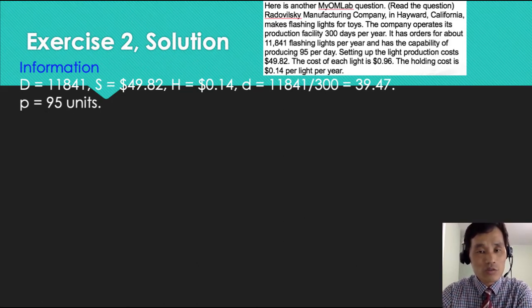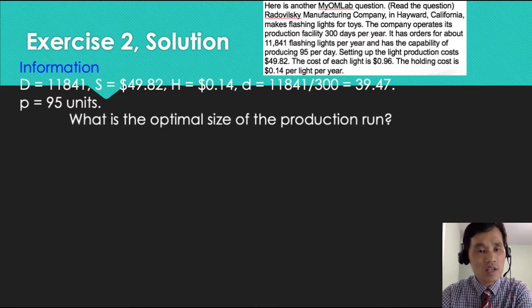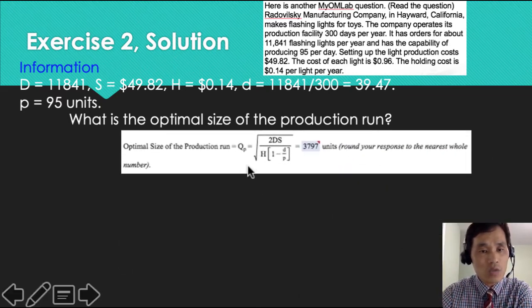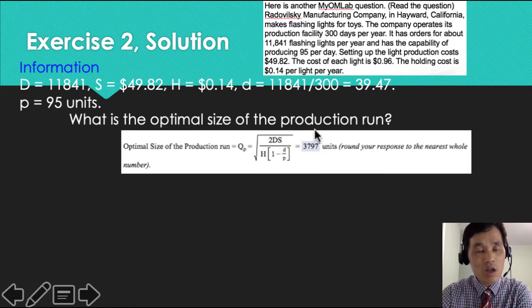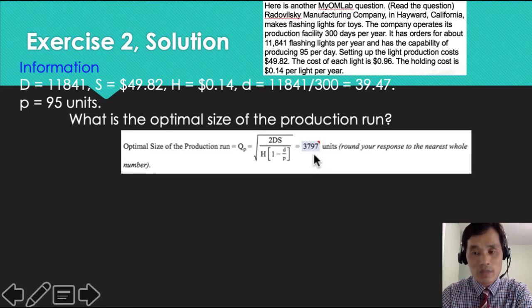The formula for production run is a little bit different. That's why I'm taking this example. What is the optimal size of the production run? When you are using EOQP, that's production run, EOQ for production run, you have to use a different formula, which is QP equals square root of 2DS over H, and this clause is added: 1 minus D over P. That has to be included. You know what daily demand is and daily production is. So 1 minus that will produce 3,797.